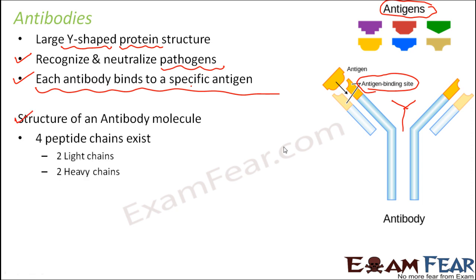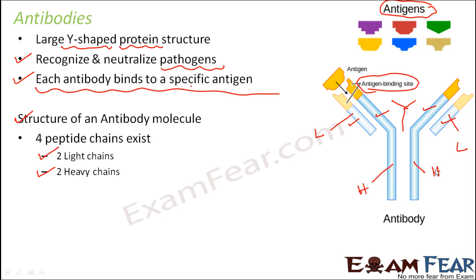Now let us look at the structure of the antibody molecule. This Y-shaped structure is made up of four peptide chains — proteins are made up of polypeptide chains. Out of these four chains, two are light chains and two are heavy chains. The light chains are the smaller ones, and the heavy chains are relatively larger.